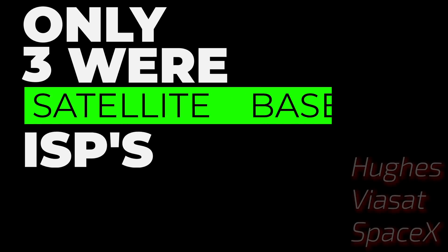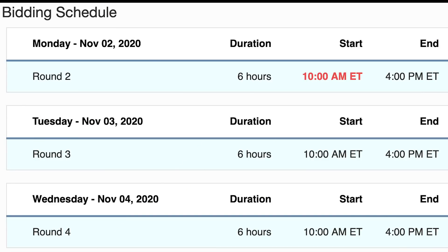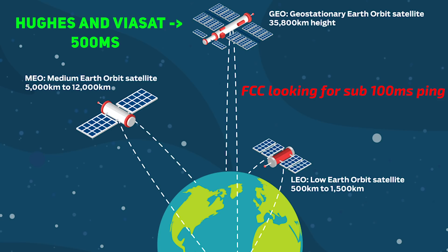Only three of the 386 qualified companies are satellite broadband ISPs: Hughes, Viasat, and SpaceX. The bidding started Thursday, October 29th, with rounds two, three, and four taking place Monday, Tuesday, and Wednesday. Hughes and Viasat use geostationary satellites at roughly 22,000 miles from the Earth, resulting in high latencies of up to 500 milliseconds or more, versus the sub-100 millisecond times the FCC is looking for. SpaceX satellites are at altitudes of less than 400 miles from the Earth and are already showing latencies of around 30 milliseconds.